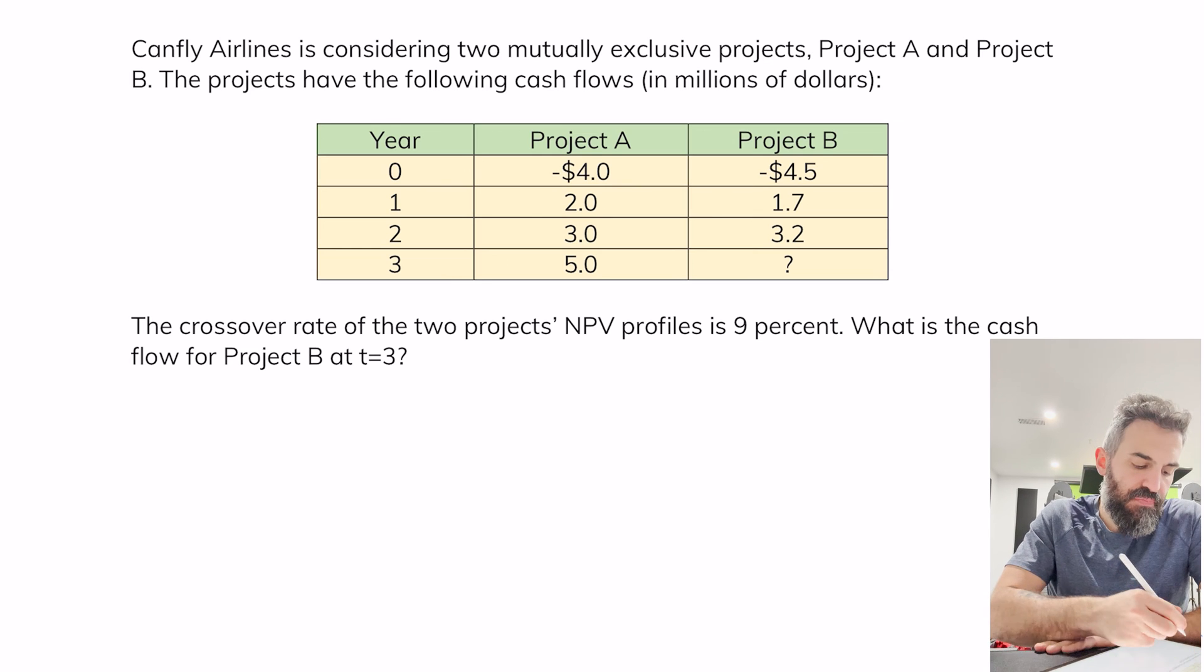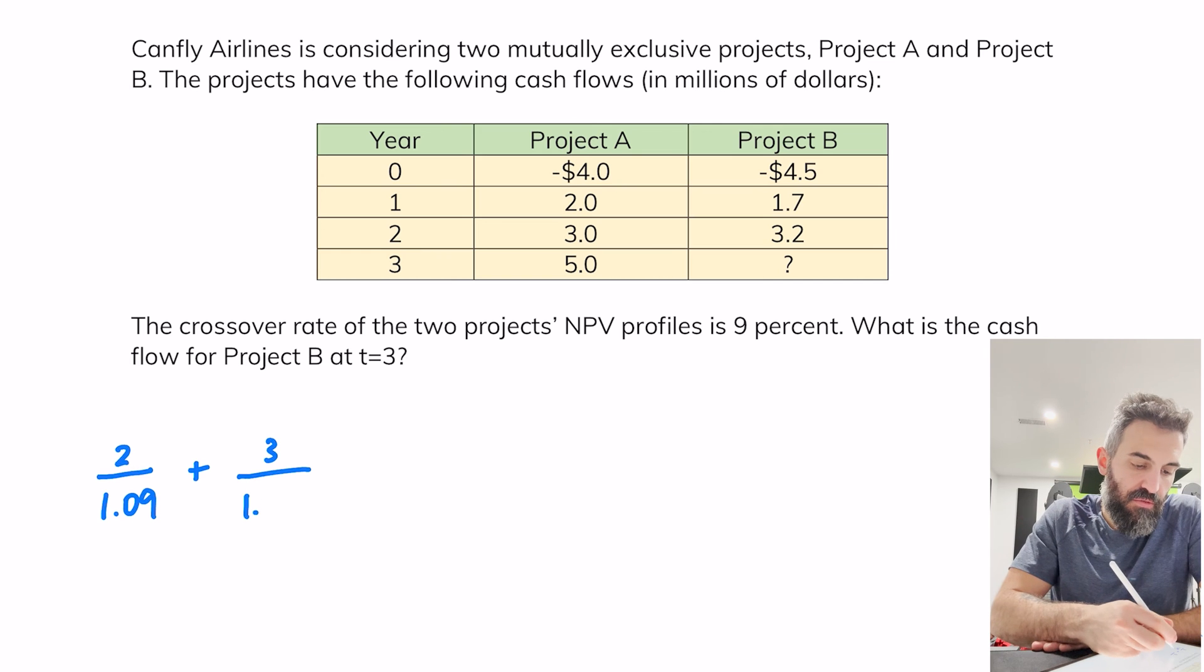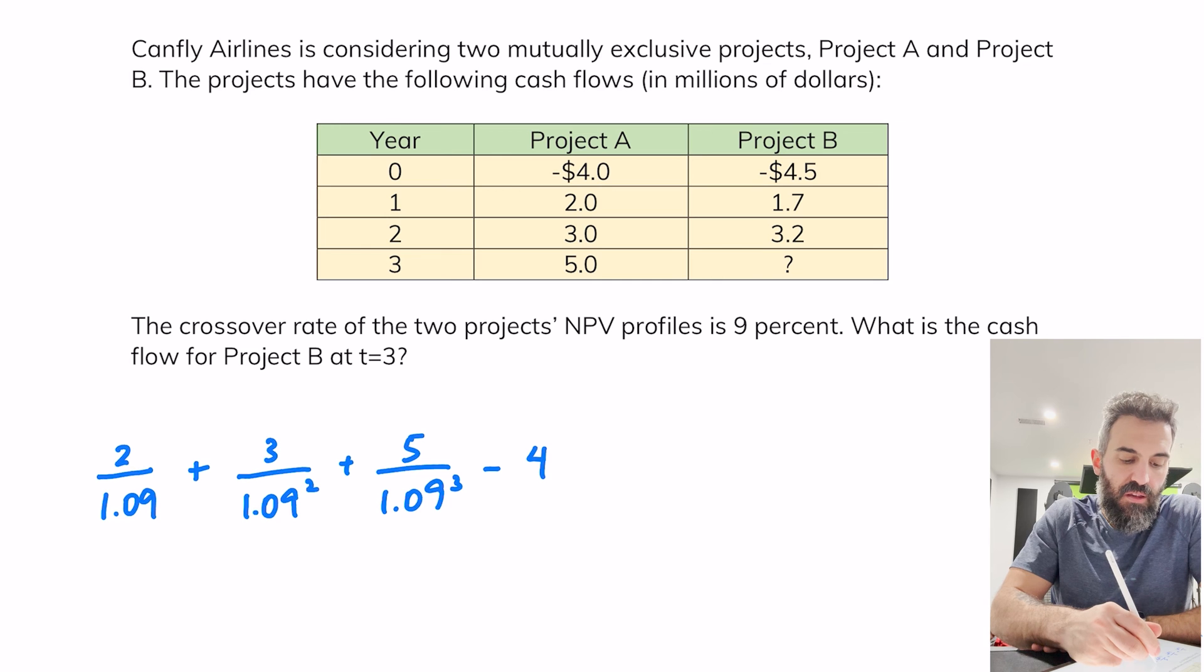For Project A, the net present value would be 2 divided by 1.09, and essentially what I'm doing here is I'm going to be discounting each of those payments back to find their present value. So the 3 in the second year would be discounted back two years, and then the 5 would be discounted back three years, minus the 4 for my initial outflow.